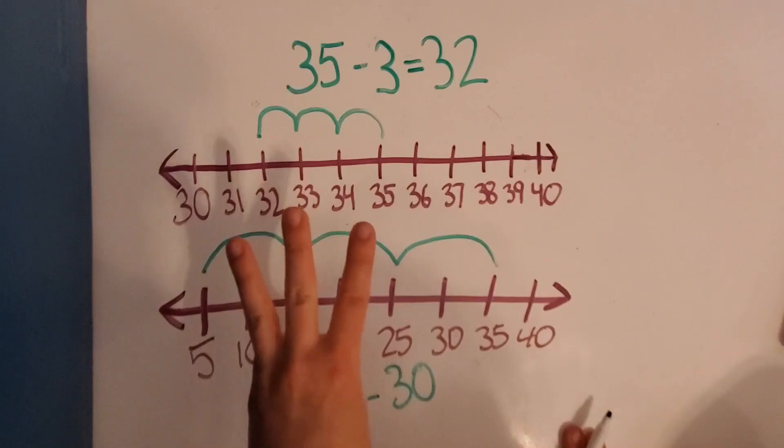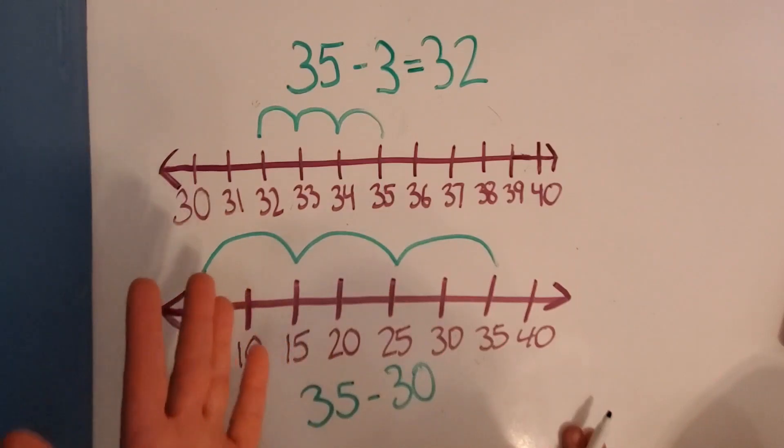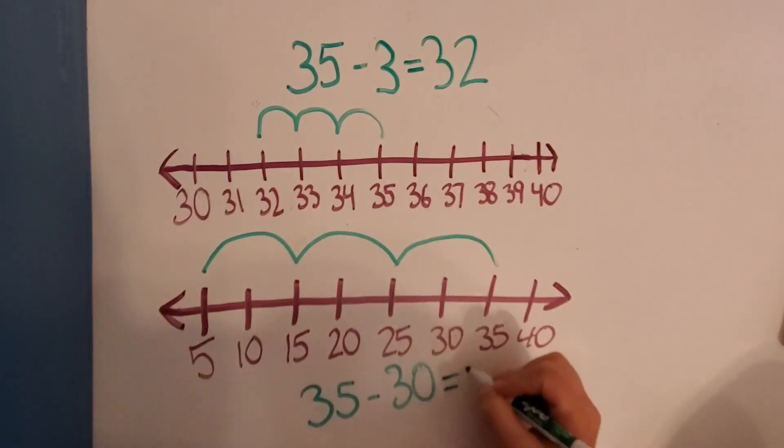And 15 back 10 is 5. So see we went 1, 2, 3, we went back 3 times, and it was by 10 that we went back each time. So 3 tens equals 30. So we did 35 minus 30, which equals what number? 5. There.